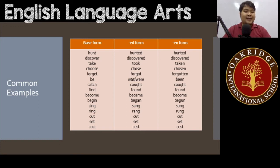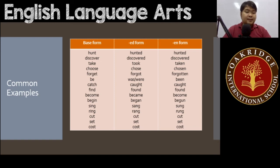For 'sing': sang, sung. For 'ring': rang, rung. Then there are verbs like 'cut,' 'set,' and 'cost,' where the base form is the same as both the ed and the en form.